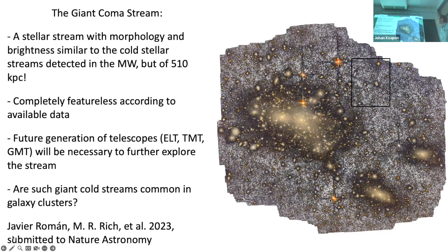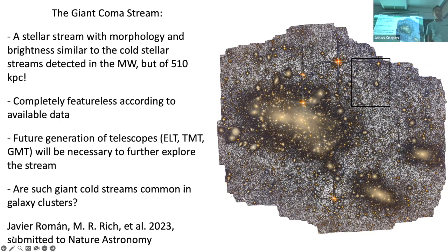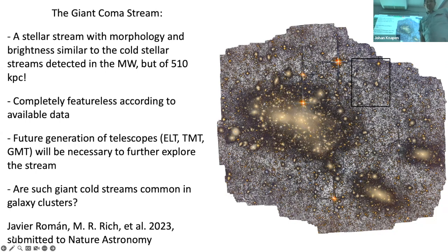So here's the first example — the giant Coma stream. We believe it is a stellar stream with morphology and brightness similar to cold stellar streams detected in the Milky Way, but of about 500 kiloparsec length, completely featureless according to available data. We'll need future generation telescopes — the ELT, TMT, or GMT — to further explore this stream because it's so faint. Are such giant cold streams common in galaxy clusters? That's a question we now pose. What can they teach us about the physics of the early universe? This paper has just been submitted.